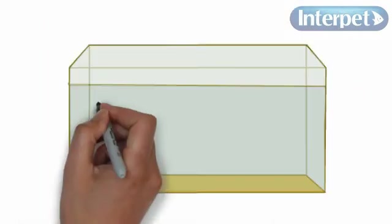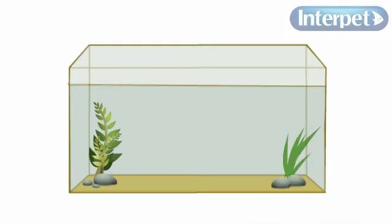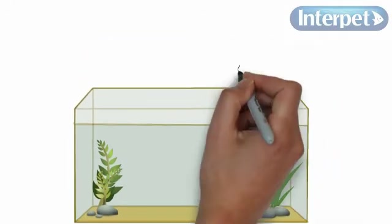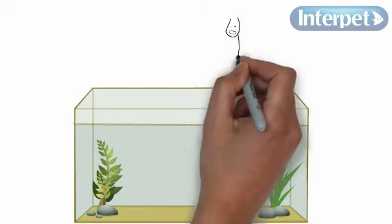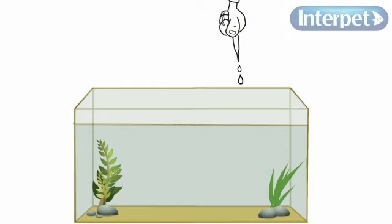But do not fear, there is plenty you can do to prevent new tank syndrome and to encourage the nitrogen cycle. You can add some bacteria. To get the population started, you can purchase bacteria-based filter starter products specifically for aquariums to speed up the cycle process.